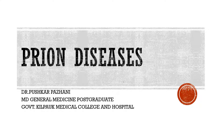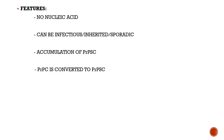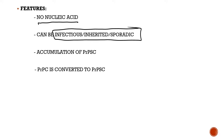Today we'll be talking about prion diseases. A few important features about prions: number one, prions are purely made up of protein — they don't have any nucleic acid, there is no DNA, there is no RNA. A unique feature of prions is they can present as different types: as an infectious disease, a familial disease, or even sporadically. This is a feature unique to prions.